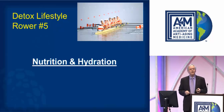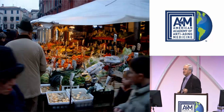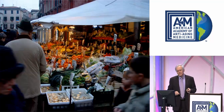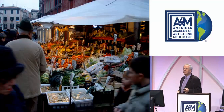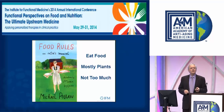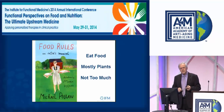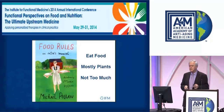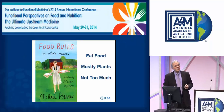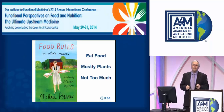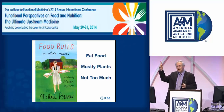Rower number five is nutrition and hydration. We must always start with food. The Institute for Functional Medicine's annual symposium this year focused on 'Functional Perspectives on Food and Nutrition: the Ultimate Upstream Medicine.' The entire four days could be summed up by Michael Pollan's book 'Food Rules' — three easy statements: eat food (real food), eat mostly plants, and not too much.